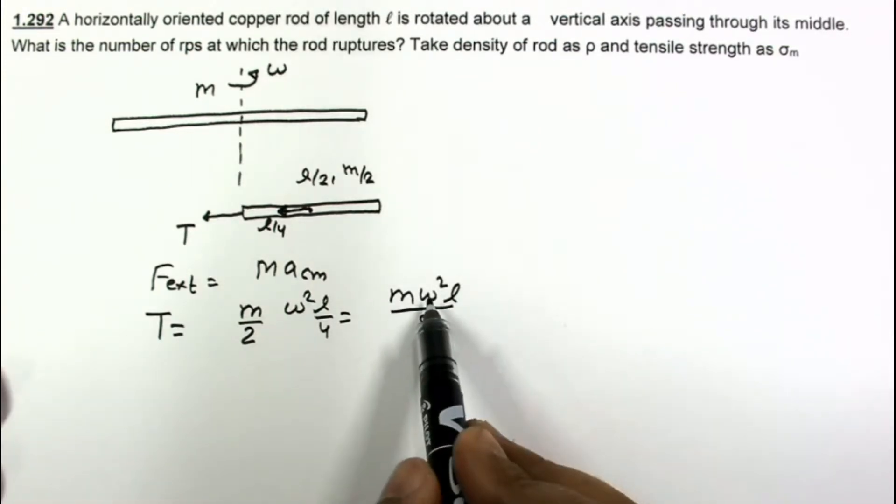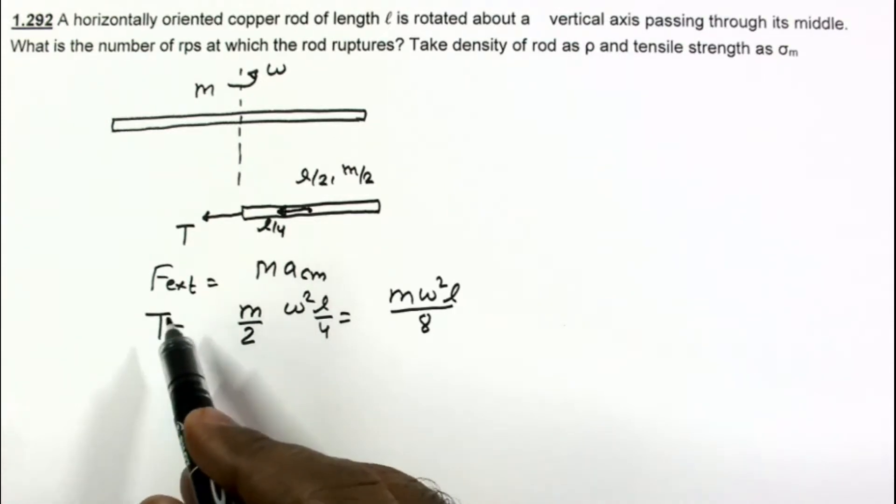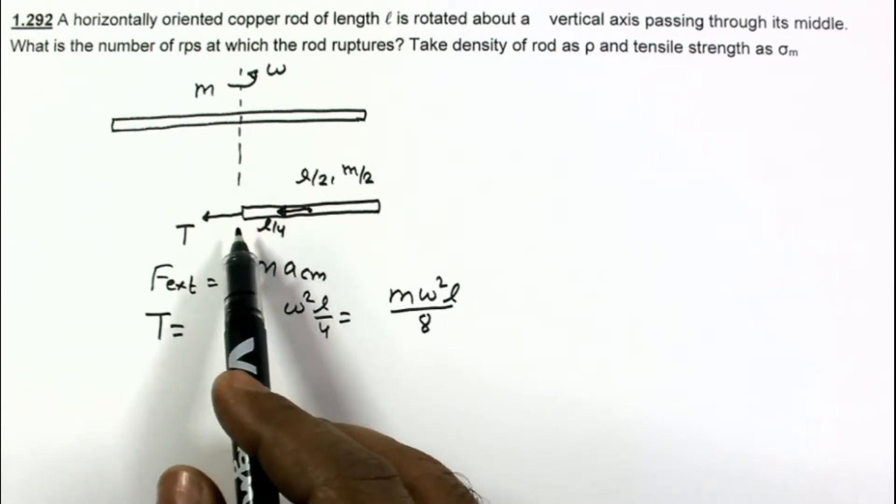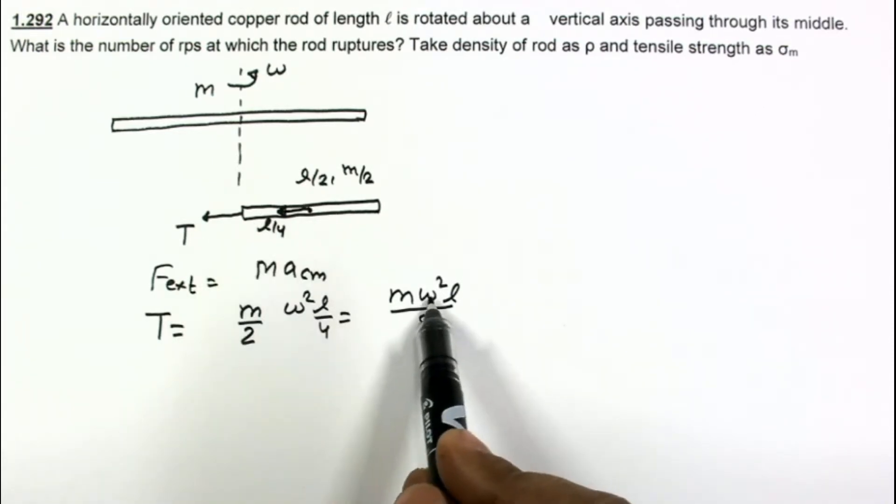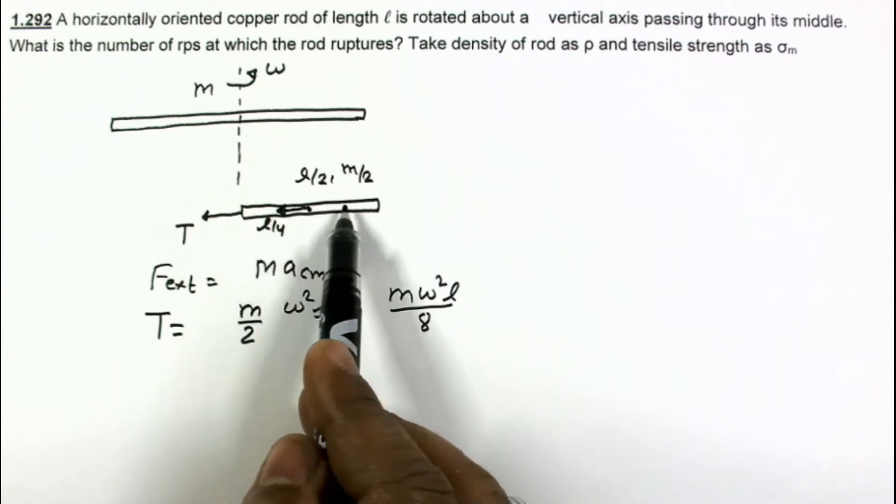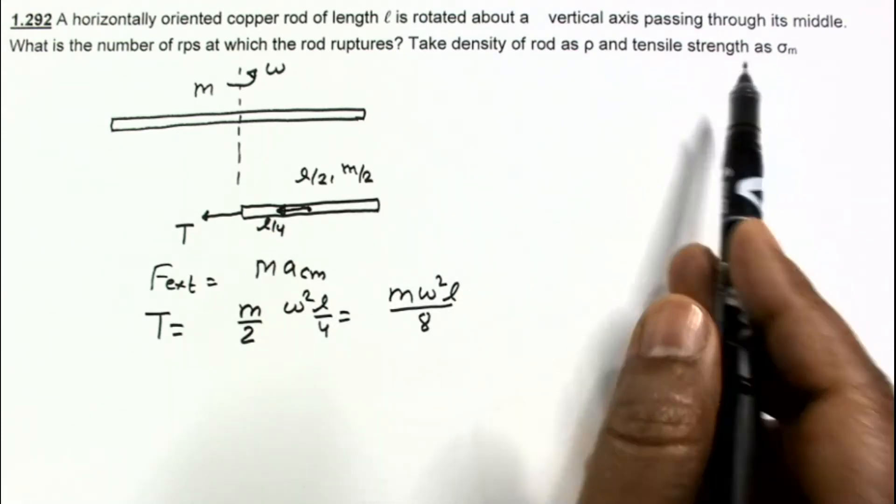As we increase ω, then tension also increases, and chances of breaking this rod also increase. This rod ruptures for a certain value of ω, and that ω corresponds to when stress in this rod equals its tensile strength, which is given as σ_m.